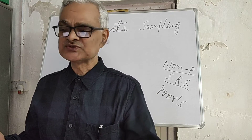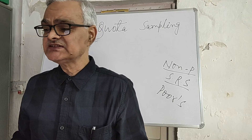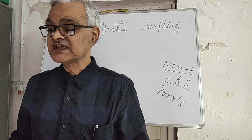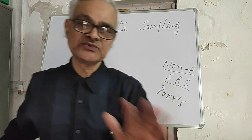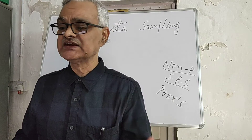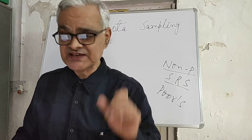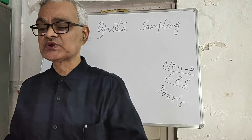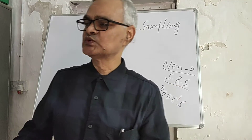Quota sampling is sometimes called the poor man's proportionate stratified sample. You must keep in mind that to stratify the population on certain identified criteria, fixing the quota against the chosen strata, and selection of units on the basis of the fixed quota by the researcher are the three steps of quota sampling method.